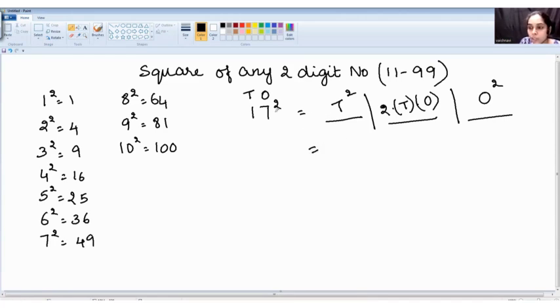What is the tens place here? It is 1. 1 square. Then 2 times 1 into 7. And the ones place square, that is 7 square. So your answer is 1, 2 sevens is 14, and it is 49.